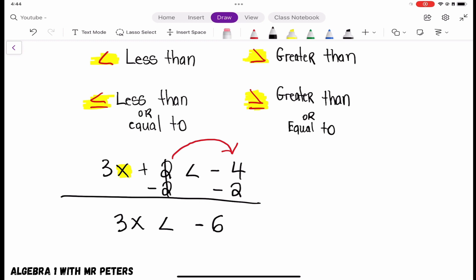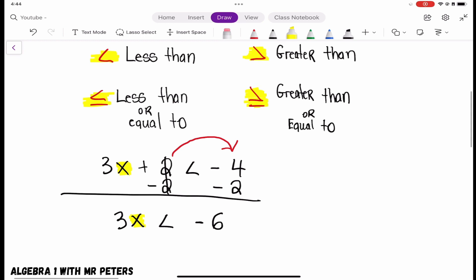Now for us to get that x by itself, we're multiplying 3 and x and we know we're trying to get to the number 6. So the opposite of multiplying is just divide.